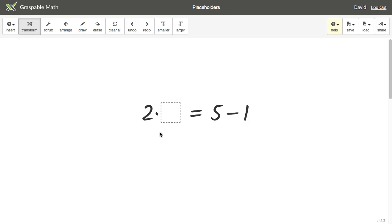Here I have an equation, 2 box equals 5 minus 1. And so the question is, what value can I put in the box so that the sides of the equation are equal?